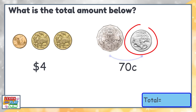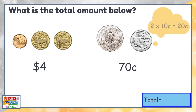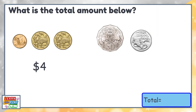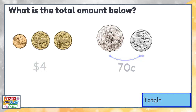Now if you get two 20 cent coins and you can't skip count by 20 yet, a strategy that can help you is to count by tens twice, because two 10 cent coins make 20 cents. So here is how it would sound starting with the 50 cent coin: 50, 60, 70. You will still get the answer of 70 cents. So the total for this collection of coins is 4 dollars and 70 cents.